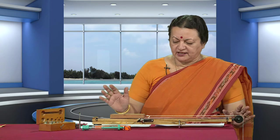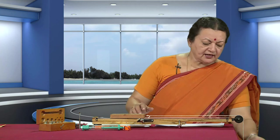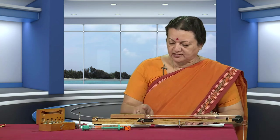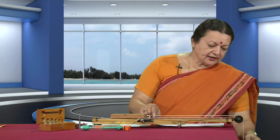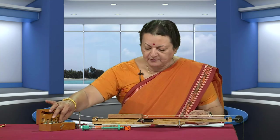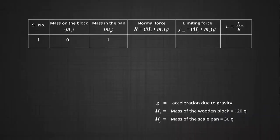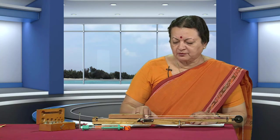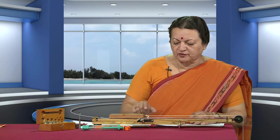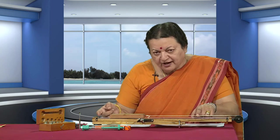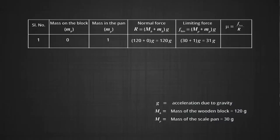First, we put nothing on the block and see if it is going to move. With 0 on top, the weight here is 120 grams, and the block is not moving. So we put 1 gram in the pan. Our first reading starts with 1 gram weight here. As you tap gently, this makes the block move — meaning this pull is exactly equal to the limiting value of friction. This reading can be recorded.